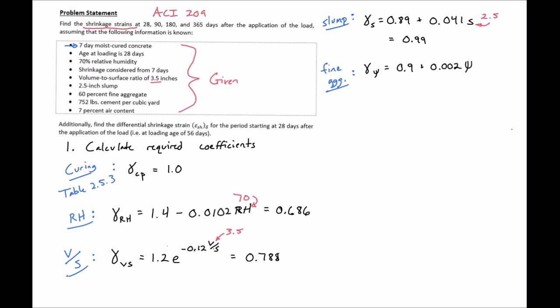We next have our fine aggregate factor. In our case we have 60% fine aggregate, so we'll plug in our 60% and we'll find our fine aggregate factor to be 1.02.